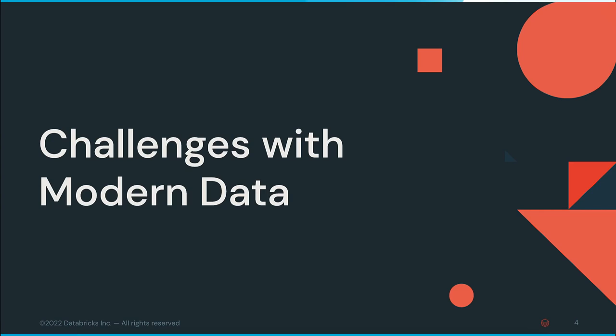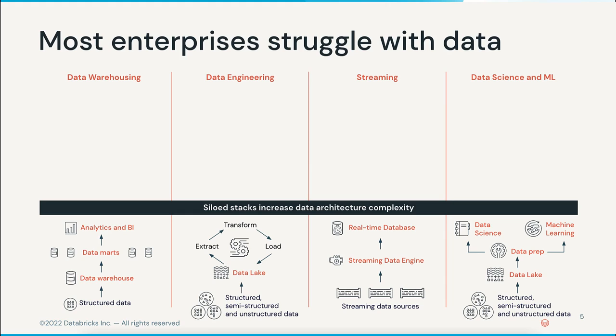Let's start at the organizational level. If you've worked in data, you're probably familiar with the idea of data existing in silos, but why does this happen? It's no secret that most enterprises struggle with data. The challenge usually starts with the architecture — trying to handle different ways of processing data based on type: data warehousing, streaming data, and unstructured data that a data science team uses for machine learning models. You then need to build different stacks to handle all your data workloads, and generally they don't work well together.